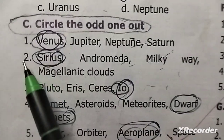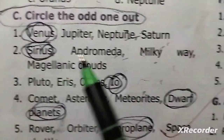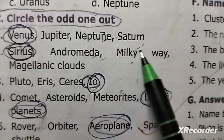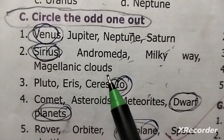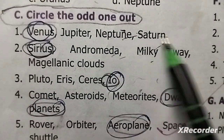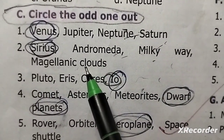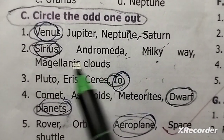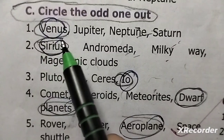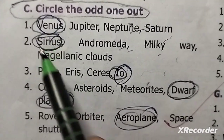Activity answers. Galaxies: Andromeda, Milky Way, Magellanic Clouds — this is the third name of a galaxy. The second is a star. This is the round shape.